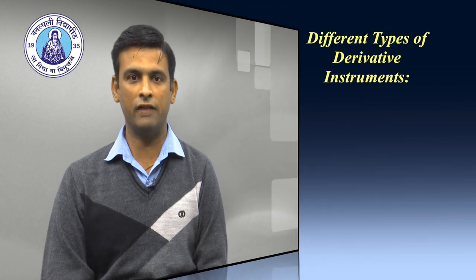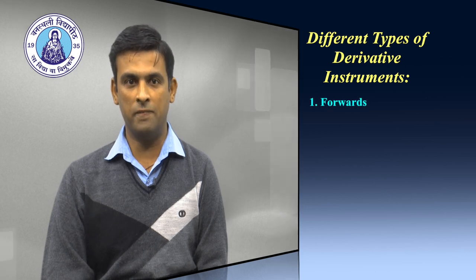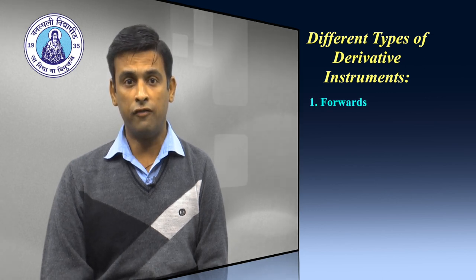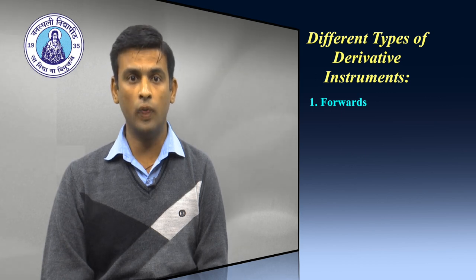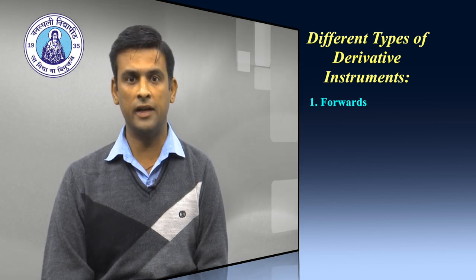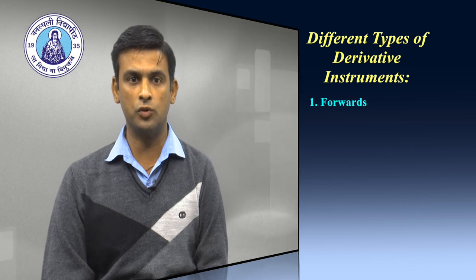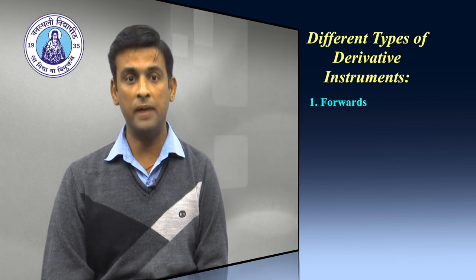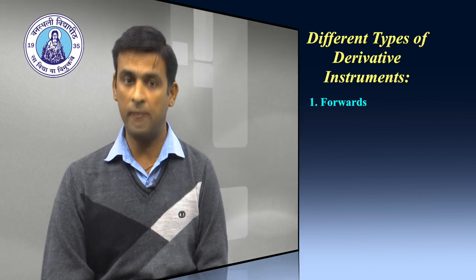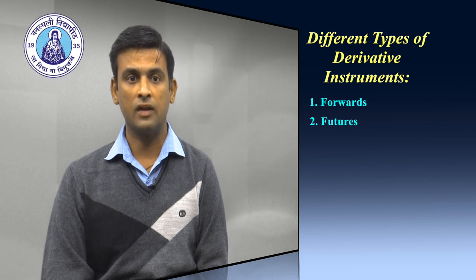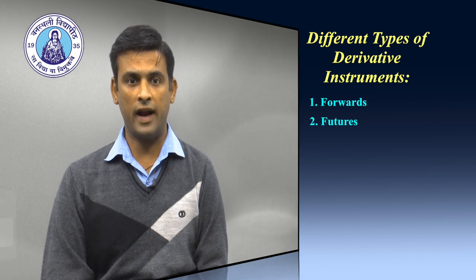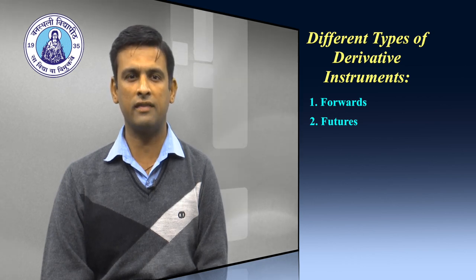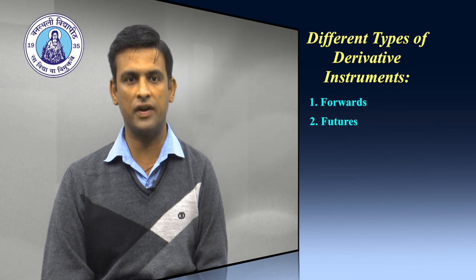Different types of derivative instruments: number one, a forward contract is a customized contract between two entities where settlement takes place on a specific date in the future at today's pre-agreed price. The second one is futures. Future contracts are a special type of forward contracts, but they are standardised exchange-traded contracts.